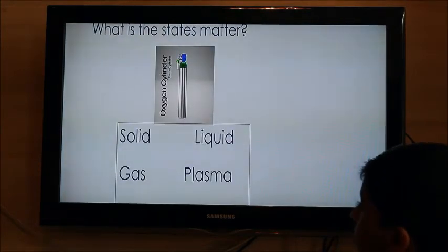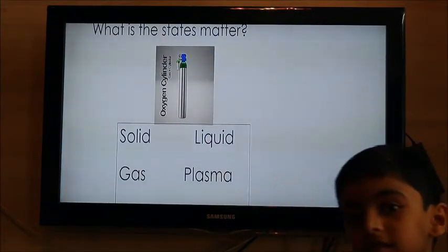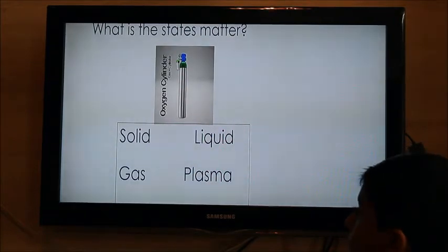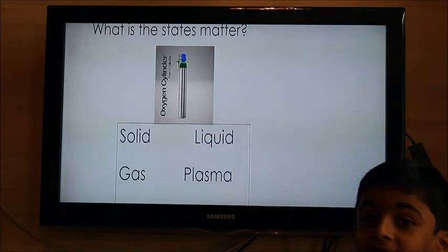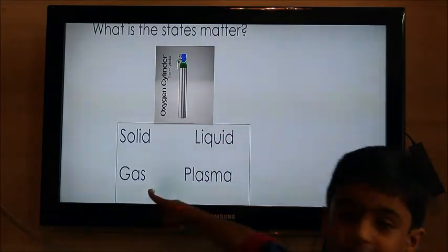What is the state of matter of oxygen? It's a cylinder shape, I think it's solid. How can it be solid? It's a cylinder shape, but inside I'm talking, so it will be gas.